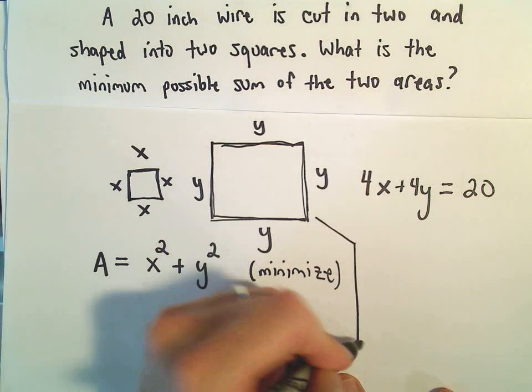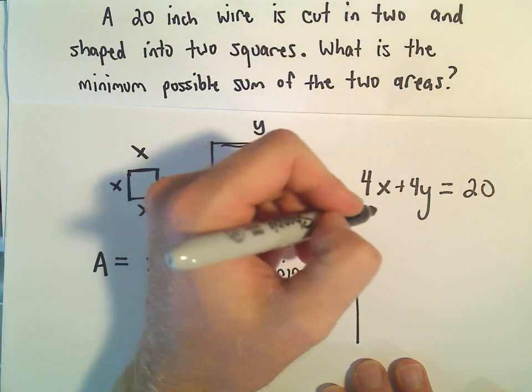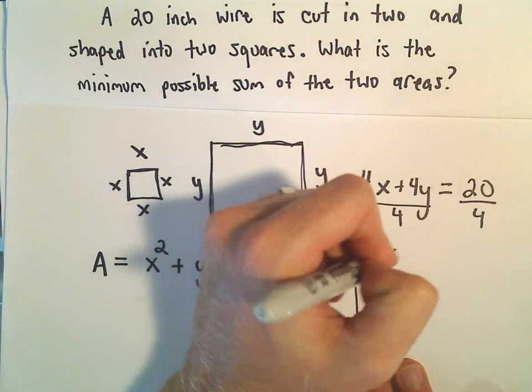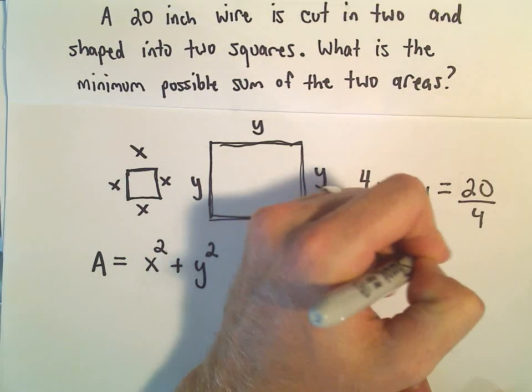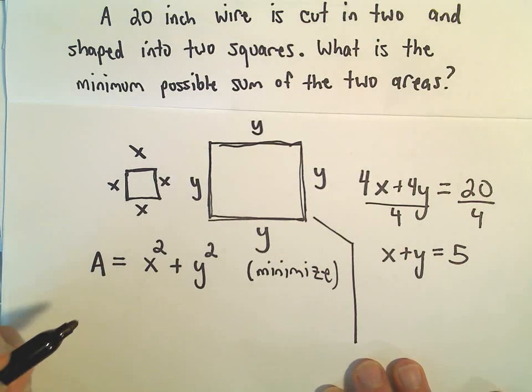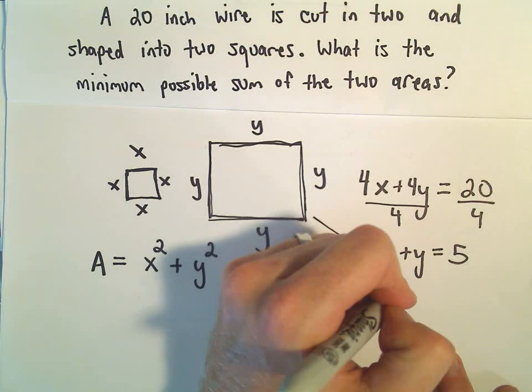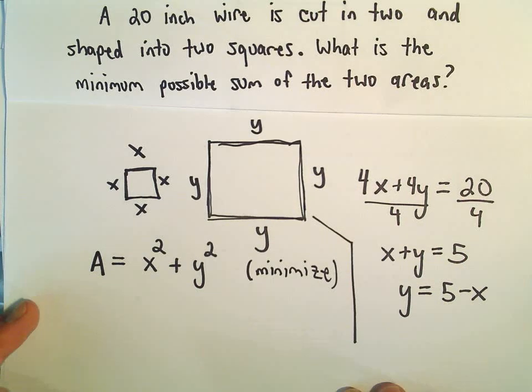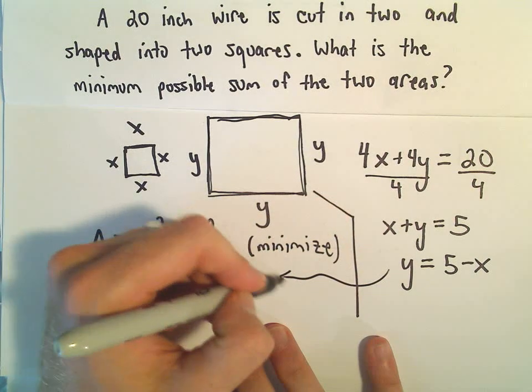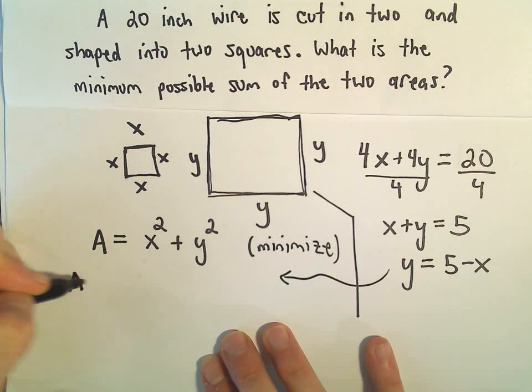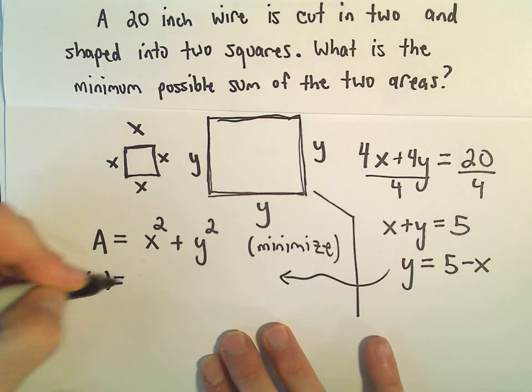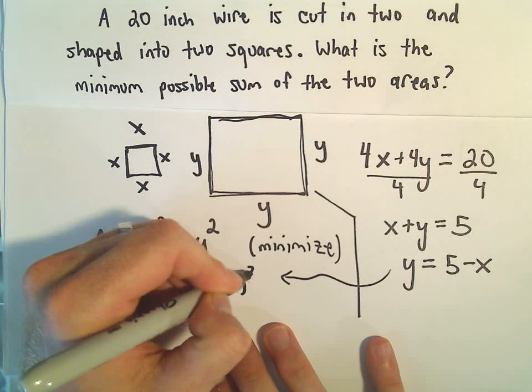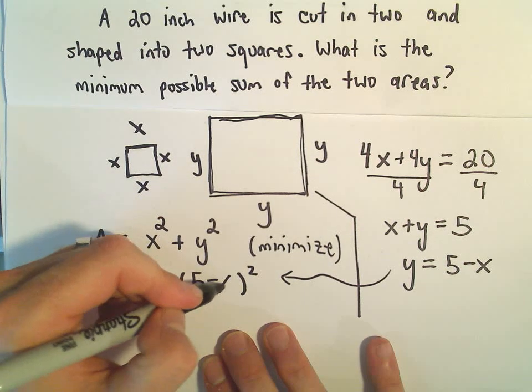So this is going to be our constraint in this problem. We could divide both sides by 4 just to make the numbers a little bit nicer. Then we would get x plus y equals 5. And I always like to have x's, so I'm going to solve this for y. And y would equal 5 minus x. All right, so now I'm going to plug that into this formula. So the area, all in terms of x, would be x squared plus y squared. But again, y is just 5 minus x.